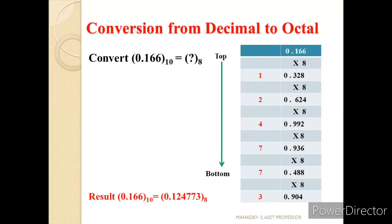Another example: 0.166 base 10 to octal. Multiplying by 8 gives 1.328, integer 1. Multiplying 0.328 by 8 gives 2.624, integer 2. Multiplying 0.624 by 8 gives 4.992, integer 4. Multiplying 0.992 by 8 gives 7.936, integer 7. Multiplying 0.936 by 8 gives 7.488, integer 7. Multiplying 0.488 by 8 gives 3.904, integer 3. Since the fractional part is repeating, we stop. The result is 0.124773 base 8.